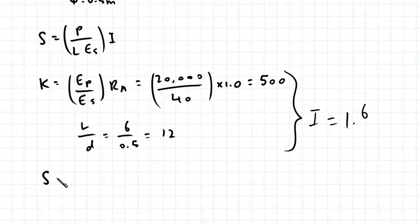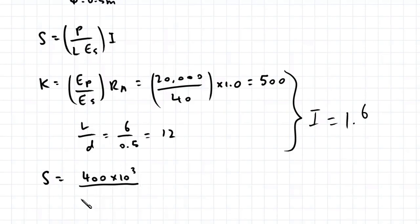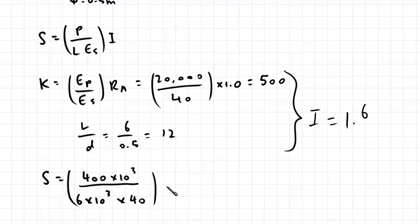Now we can calculate the settlement. S is equal to P, that's 400 times 10 to the power 3 — converting everything to newtons and millimeters — divided by the length of 6 meters times 10 to the power 3 times 40, multiplied by the influence factor 1.6. This gives us a settlement of 2.7 millimeters.